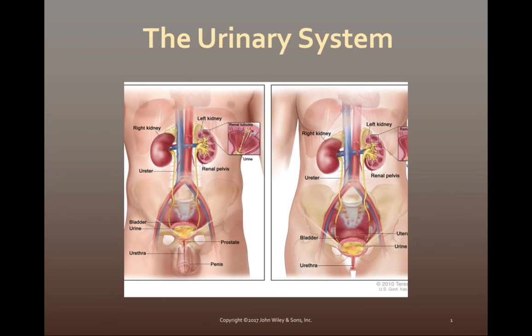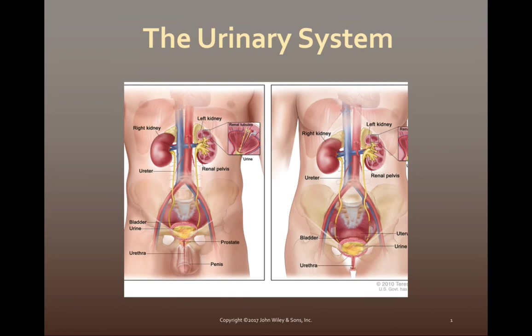One of the first things we need to do when starting a new system is discuss its components. The urinary system only has four components: the kidneys, of which there are two; the ureters, of which there are two; the urinary bladder, which is a singular structure; and the urethra. Since we're including the urethra, the male urinary system will be slightly different from the female urinary system, and I'll discuss those differences at the end of this presentation.